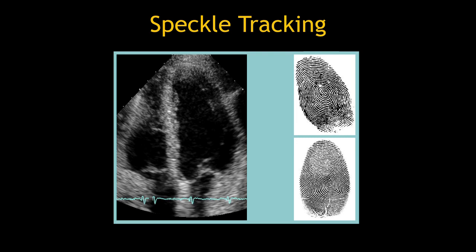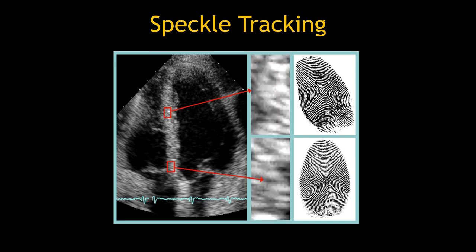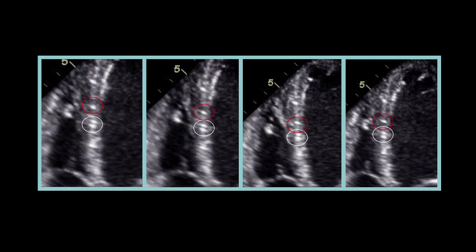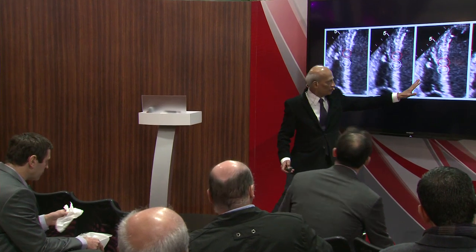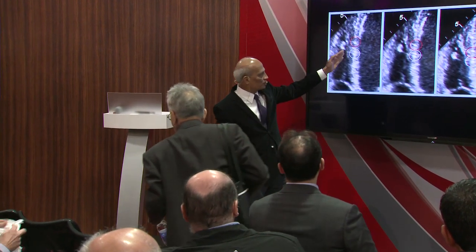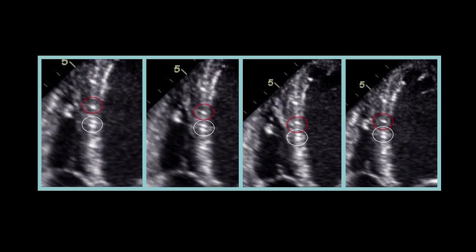For those not familiar, speckle tracking works as follows: an ultrasound image is not a uniform texture — there are bright spots and dark spots called speckles, almost like a thumbprint, where each region has a unique pattern. We can track any particular speckle over time. From end diastole to systole, you follow these speckles and can see them moving, allowing you to truly track the tissue and the deformation that happens over time.